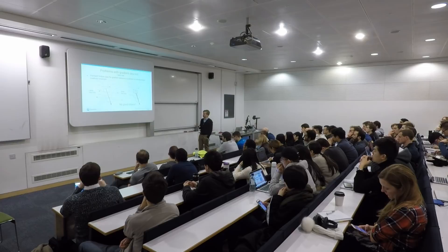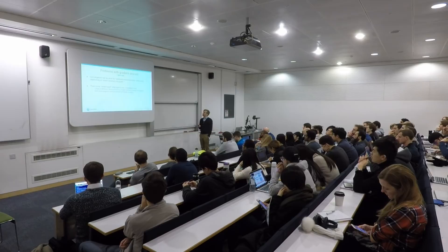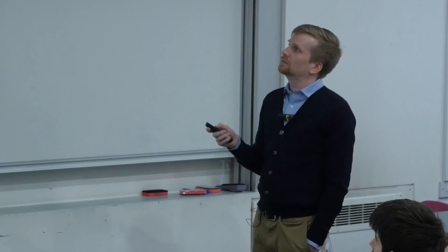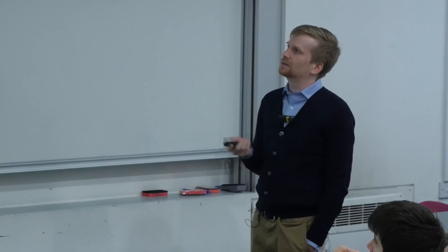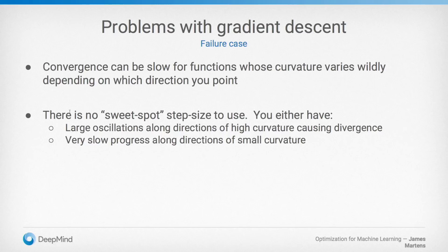So if you have functions whose curvature varies in different directions, gradient descent is quite slow, and there's no sweet spot in terms of step size. Either it's big enough that you get big oscillations, or it's small enough that you're too slow in the flat directions.